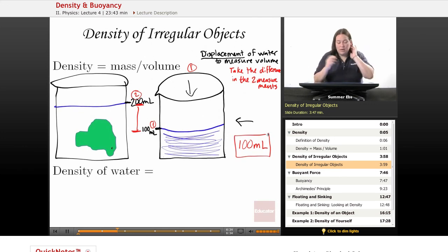Subtract it and we have 100 milliliters. All we have to do is put that object on a scale. It measures 200 grams. Divide that by your volume, 100 milliliters, and your density of that object is 2 grams per milliliter. Just that simple. Mass divided by volume, and to find the volume you use displacement.